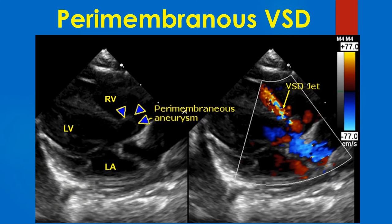An echocardiogram showing ventricular septal defect in the parasternal view demonstrates the subaortic perimembranous ventricular septal aneurysm marked by arrows. The colour mosaic jet from the left ventricular outflow region into the right ventricle is seen in the right panel. The perimembranous aneurysm indicates the VSD is on the closure path.